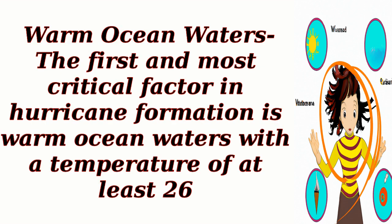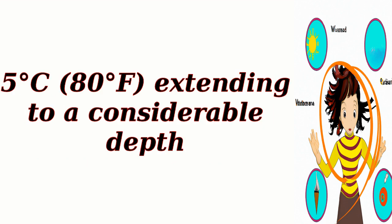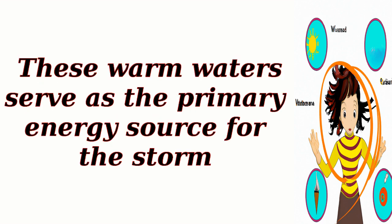Warm ocean waters: the first and most critical factor in hurricane formation is warm ocean waters, with a temperature of at least 26.5 degrees Celsius (80 degrees Fahrenheit), extending to a considerable depth. These warm waters serve as the primary energy source for the storm.